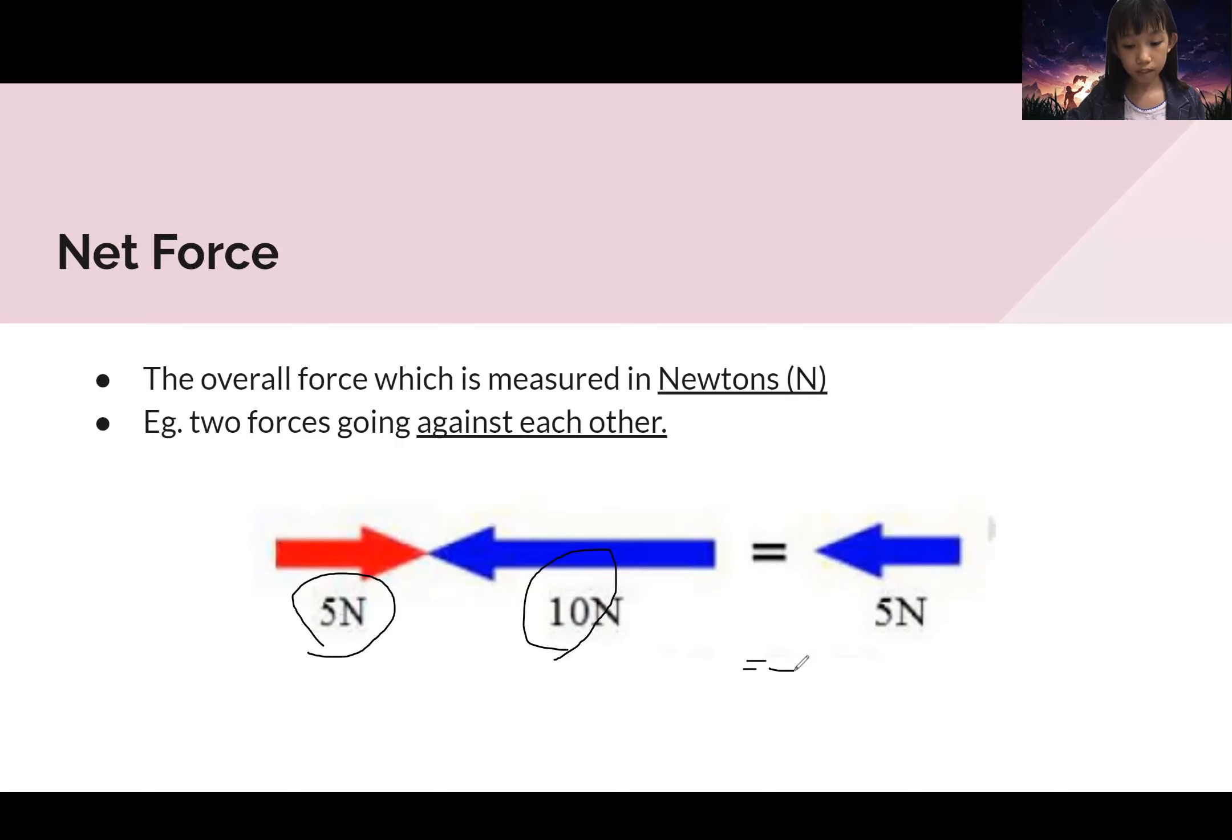But over here it's five. Why? It's because when it goes negative ten, this is larger than five newtons. As you can see, this is going to the left side. Therefore, it will go to the left side by five newtons.